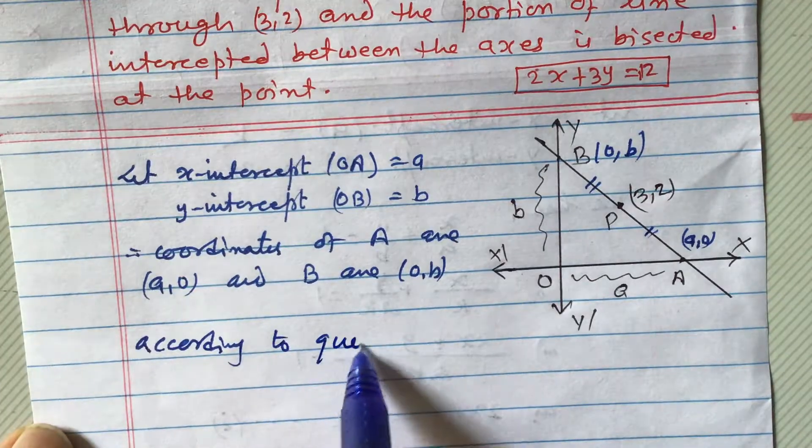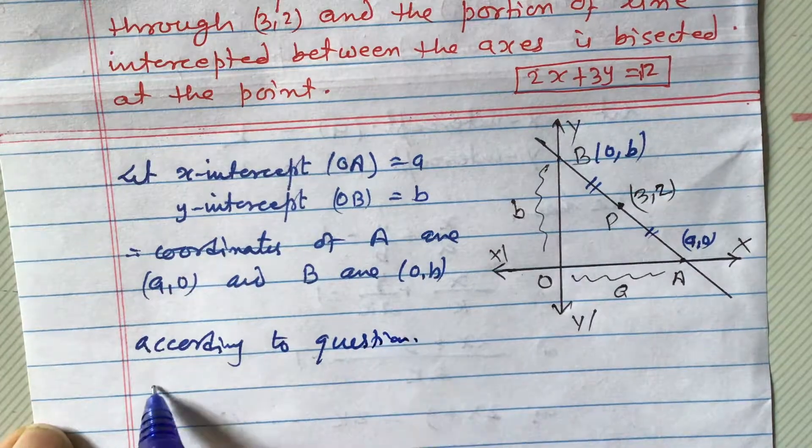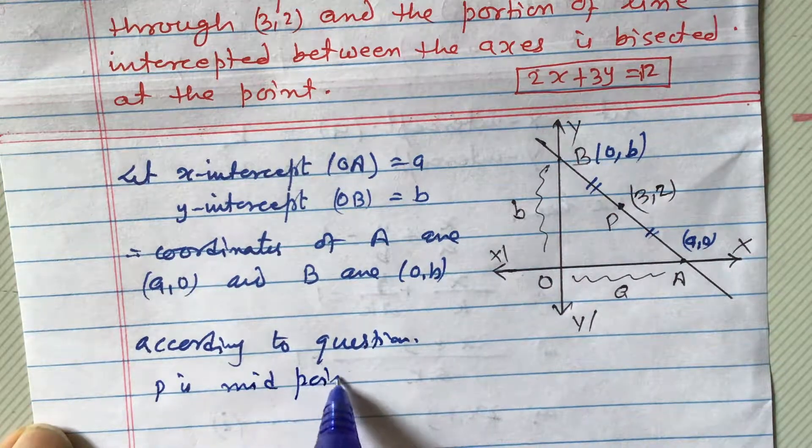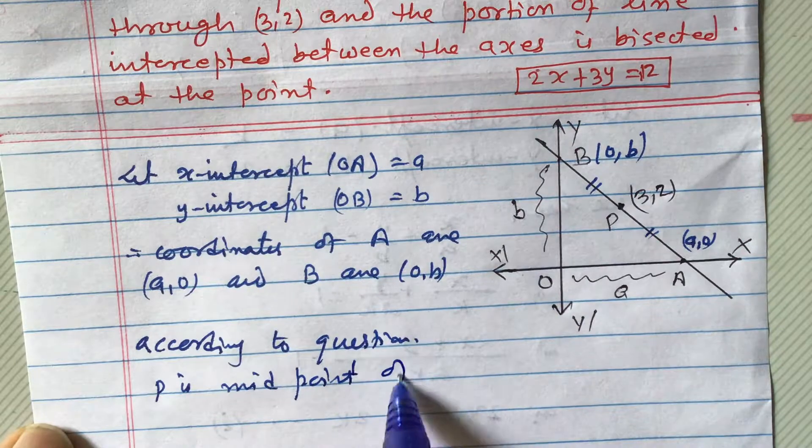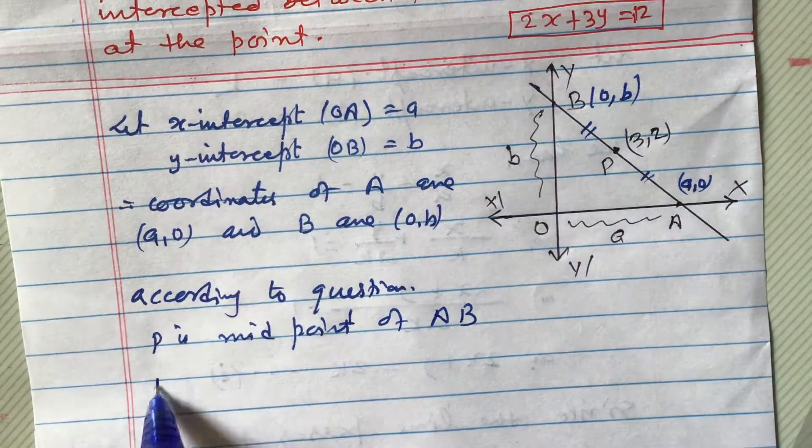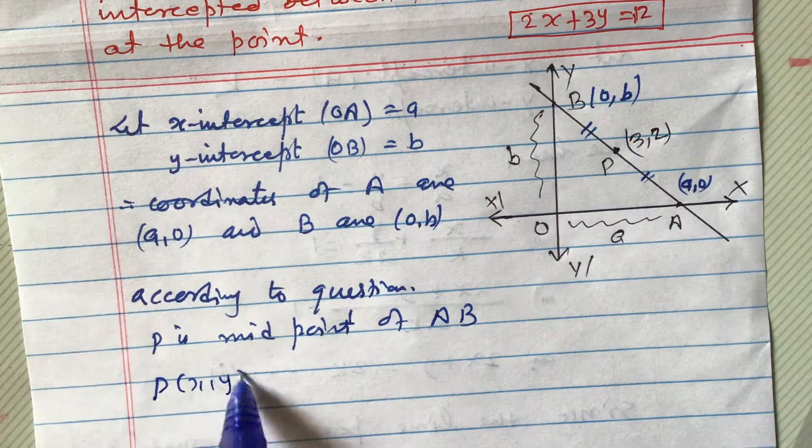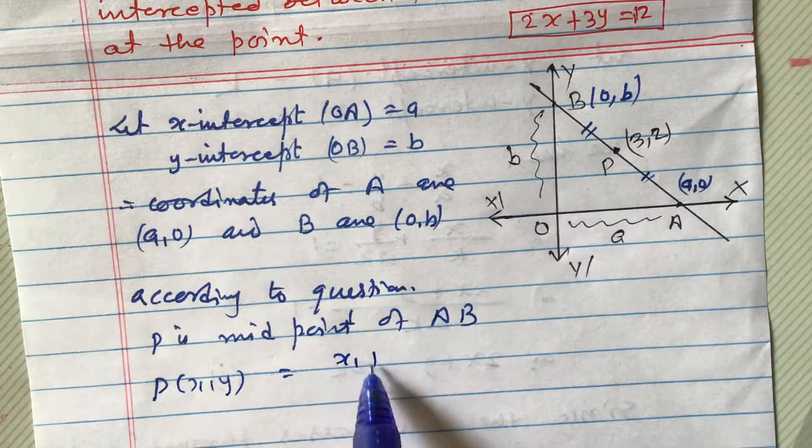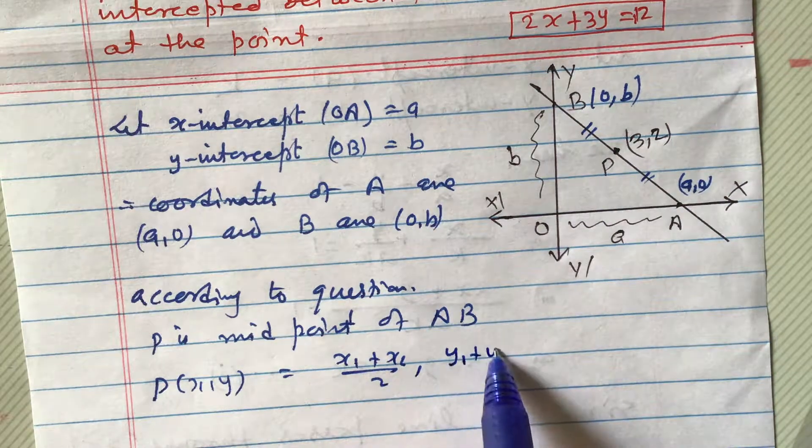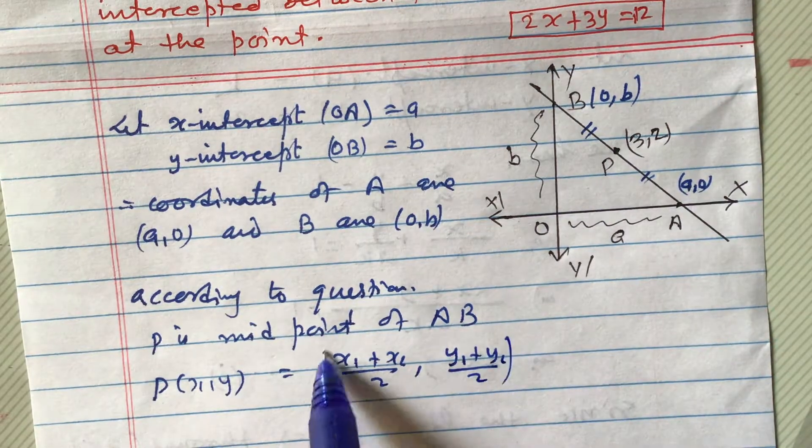P is midpoint of A, B. So, what we can do here, P(x, y) will be equals to (x1 plus x2) by 2 comma (y1 plus y2) by 2. We can use this formula, midpoint formula.